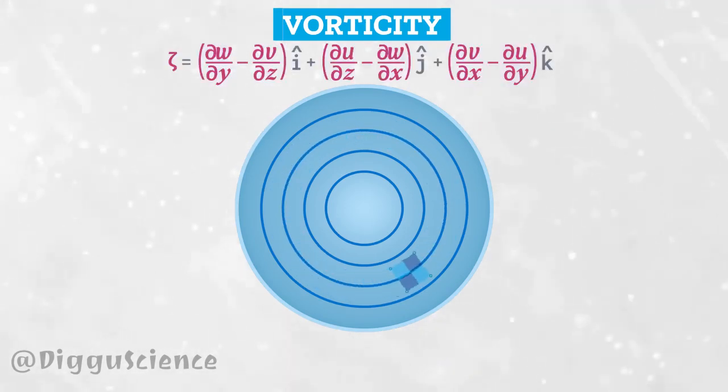Partial w partial y minus partial v partial z i hat, plus partial u partial z minus partial w partial x j hat, plus partial v partial x minus partial u partial y k hat.